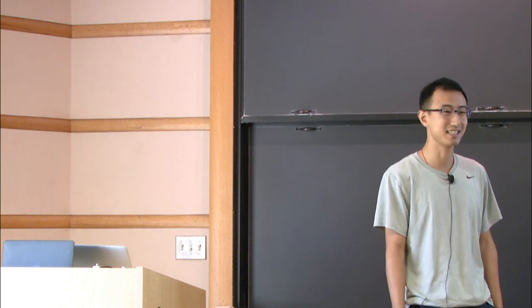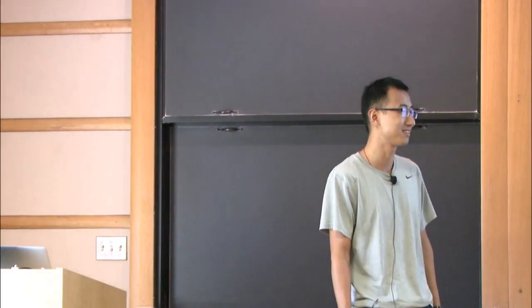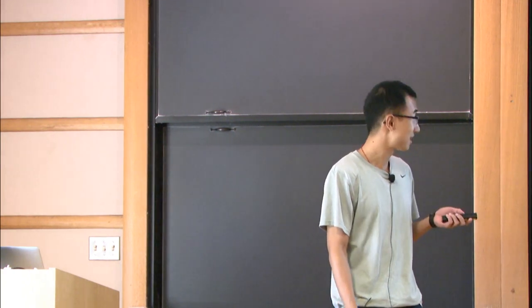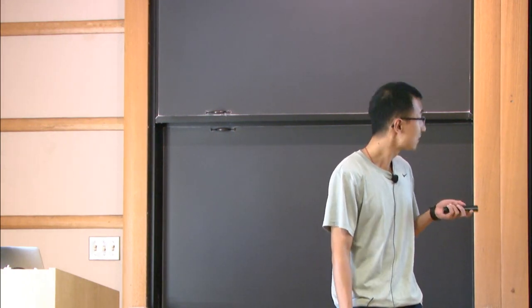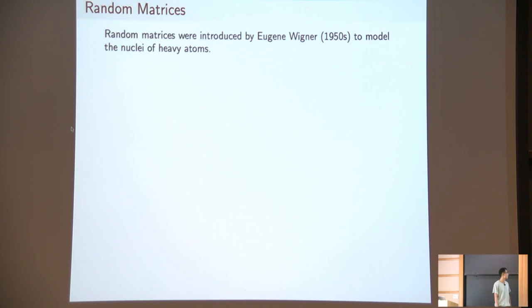In other words, I studied the eigenvalues and eigenvectors of sparse random matrices from the random matrix point of view. Random matrices were introduced by the physicist Wigner in 1950, I think when he was at Princeton, to model the nuclei of heavy atoms.